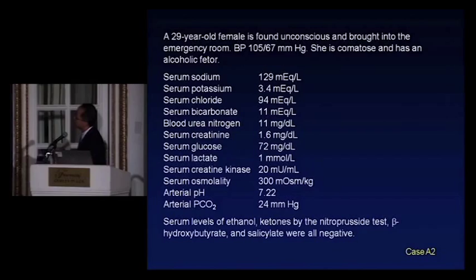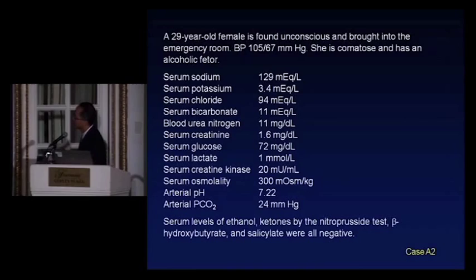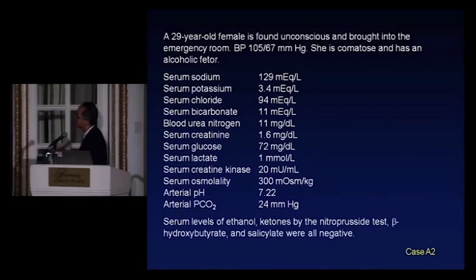Next: a 29-year-old female found unconscious and brought into the ER. Blood pressure is 105 over 67. She is comatose and has an alcoholic fetor. Sodium 129, K 3.4, bicarb 11, creatinine 1.6, glucose 72, lactate 1, CK 20, serum osmolality 300, pH 7.22, PCO2 24. Serum levels of ethanol, ketones, beta-hydroxybutyrate, and salicylate are all negative.